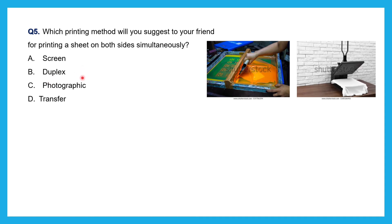Duplex printing and roller printing are similar. In roller printing, the sheet or fabric is passed through cylindrical rolls to transfer the design. The difference is that in duplex printing, the design is transferred to both sides of the fabric or sheet simultaneously. The answer for the fifth question is duplex printing.